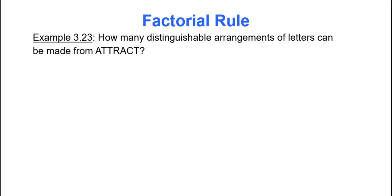How many distinguishable arrangements of letters can be made from the word attract? So we're going to take all seven letters of attract and we're going to rearrange them and we want to figure out how many distinguishable arrangements are there. Well, I don't want you to sit here all day and just literally take the seven letters and move them around and make all these different arrangements. I'm going to use the factorial rule. So I have seven letters, but I do have repeats. I have two A's and I have what else repeats? Three T's.